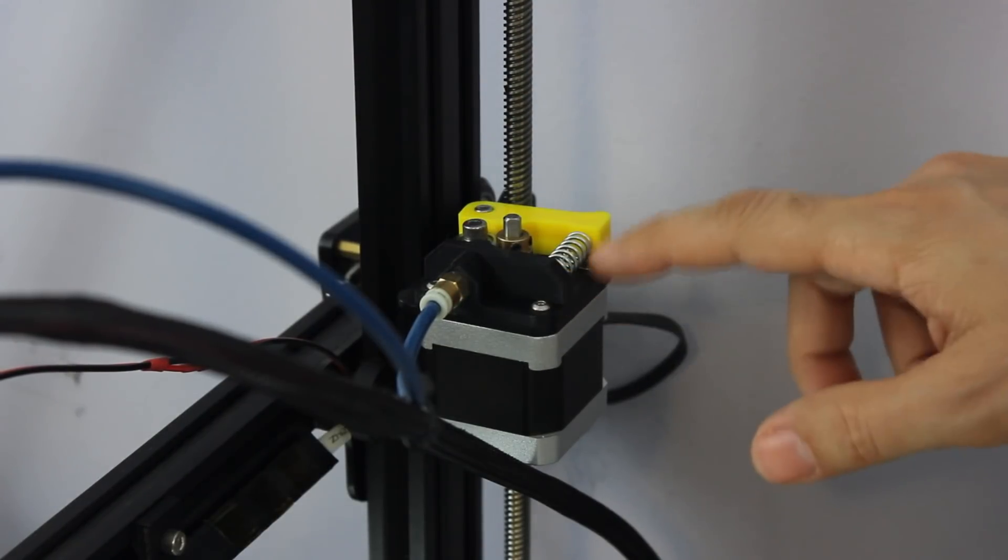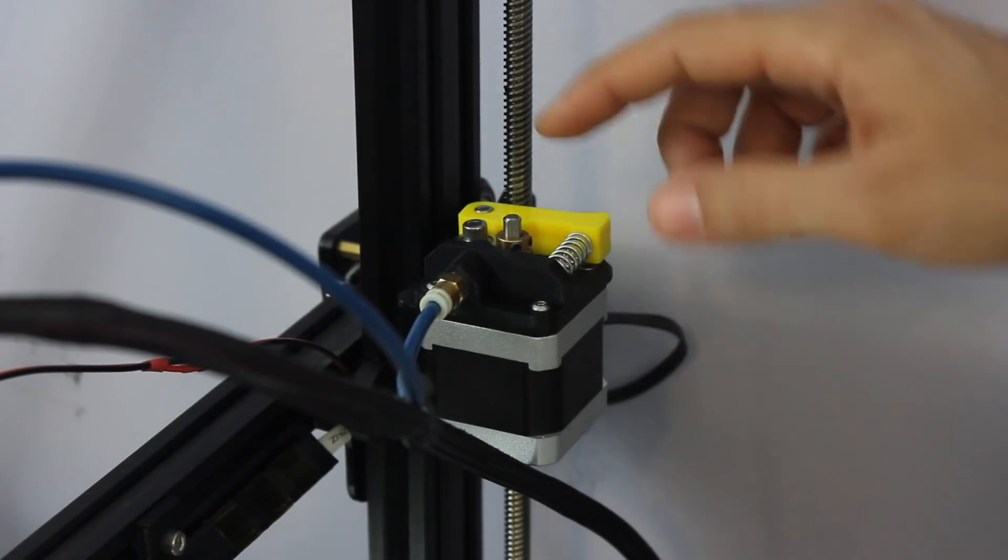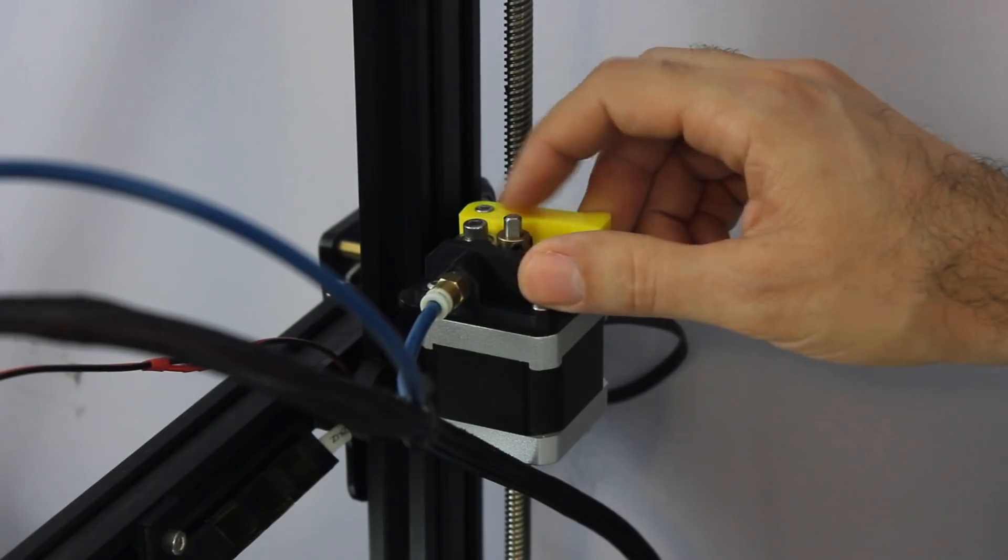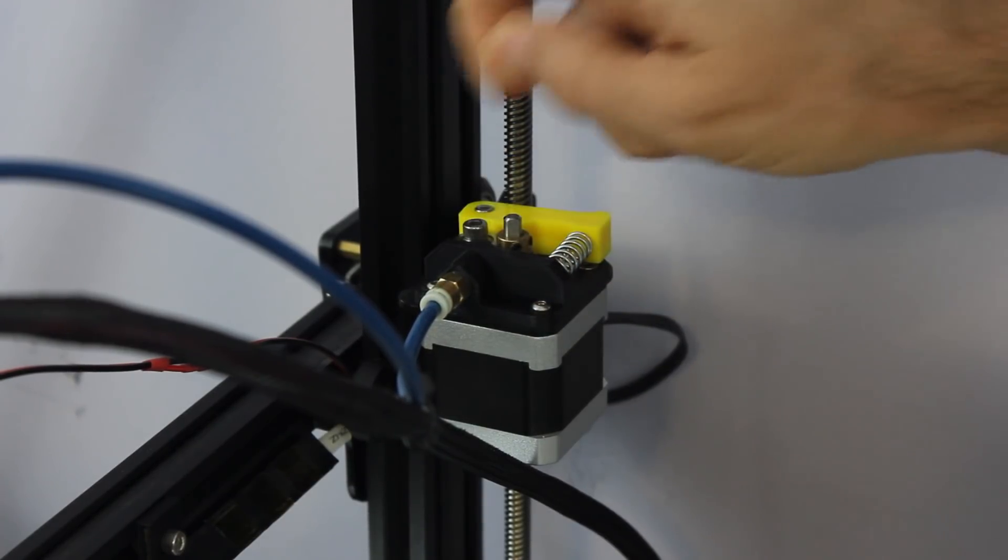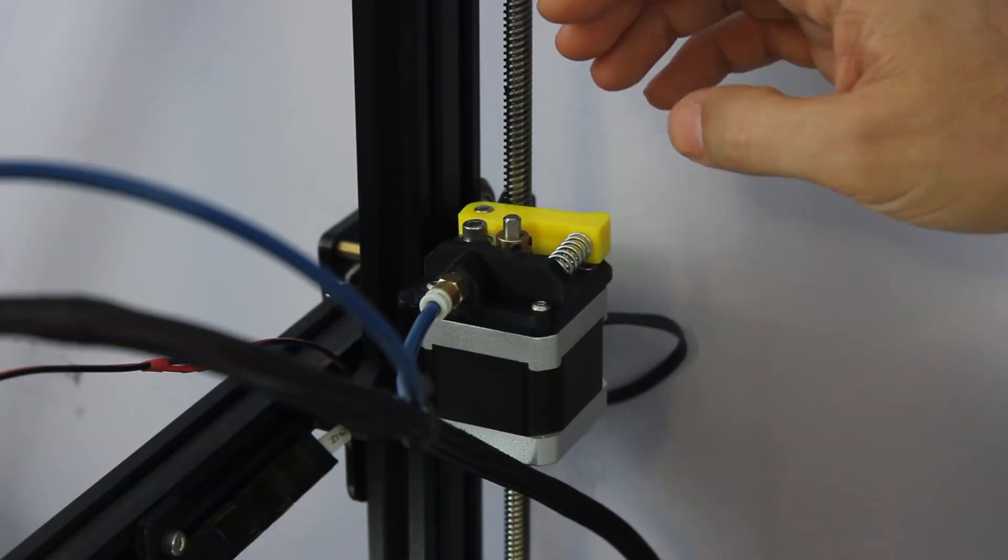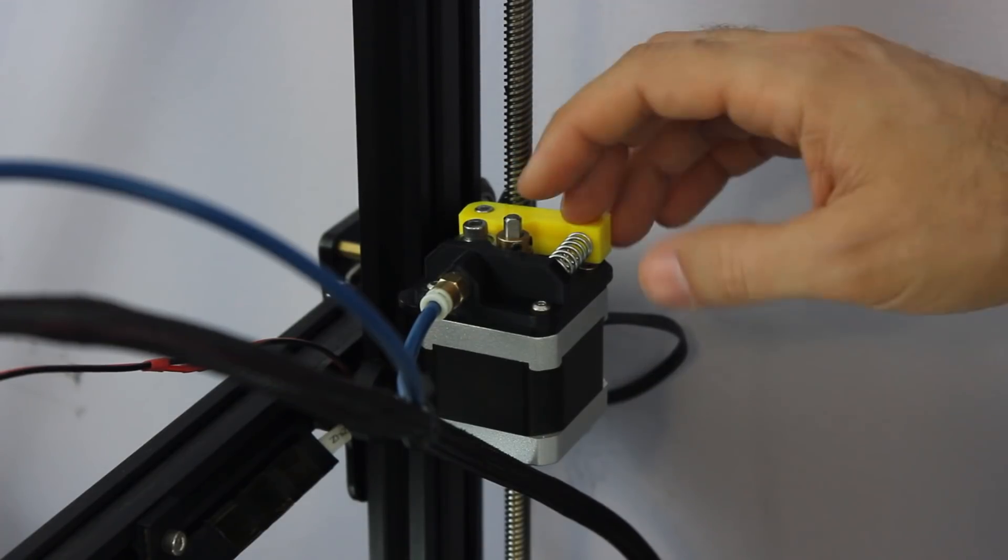I printed the flexible upgrade for this one, but really everything else, this arm here and everything is the original that came with the printer, and I used it for several thousand hours.